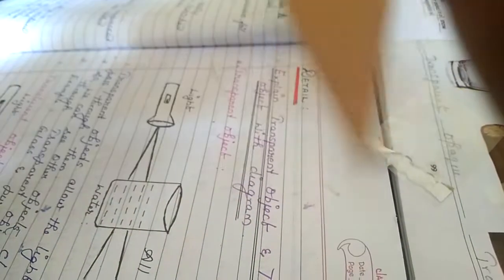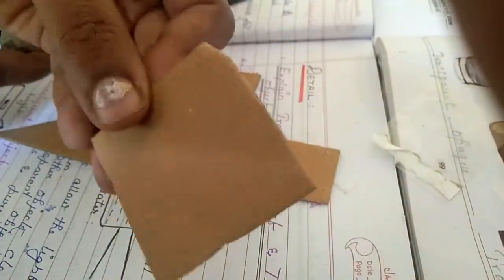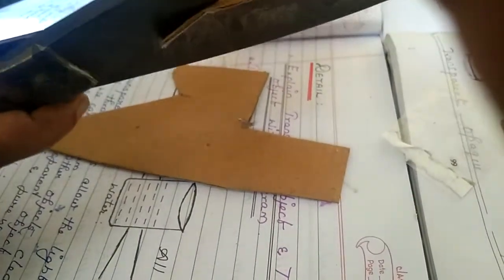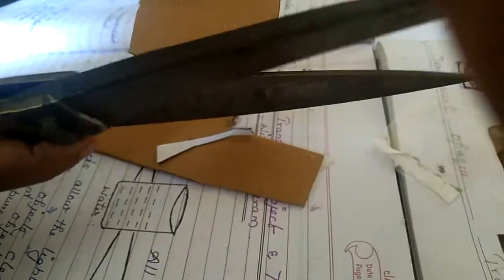We will cut out one more rectangular sheet. It should be like a view in the bottom.